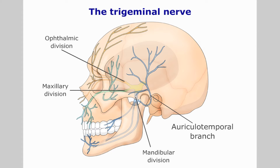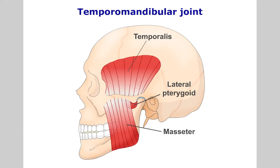The joint is innervated by the auriculotemporal nerve and the masseteric branch of the trigeminal nerve. The TMJ derives its movement from the masseter, temporalis, lateral and medial pterygoid muscles. The lateral pterygoid is attached to the articular disc and assists in controlling its position during TMJ functioning. The masseters are attached onto the angle of the mandible and the temporalis onto the coronoid process of the mandible.